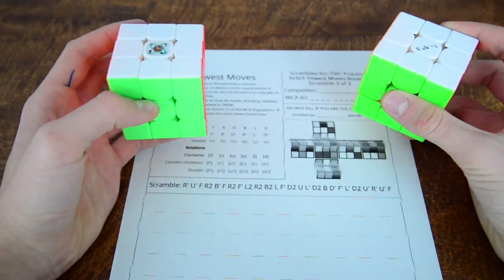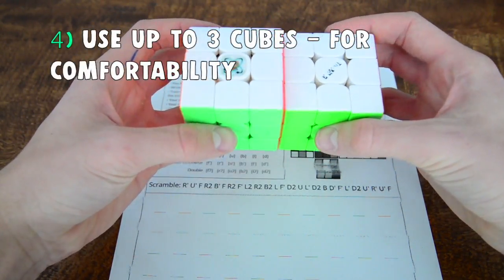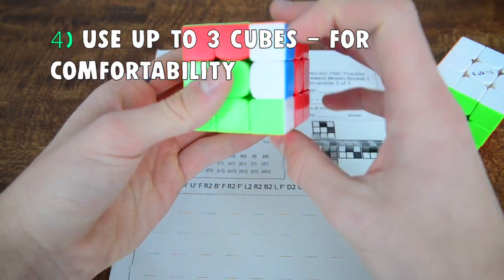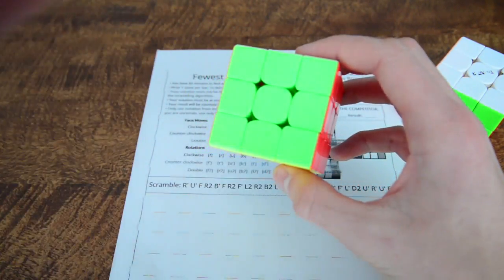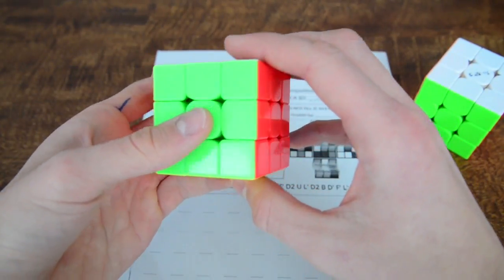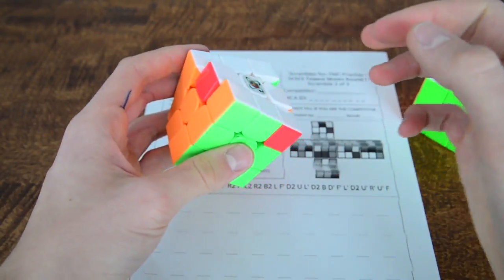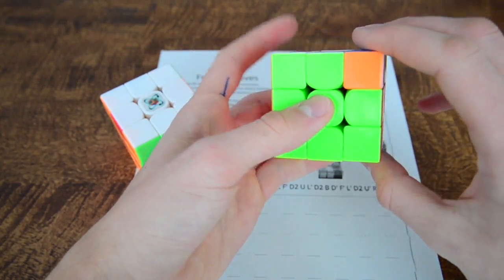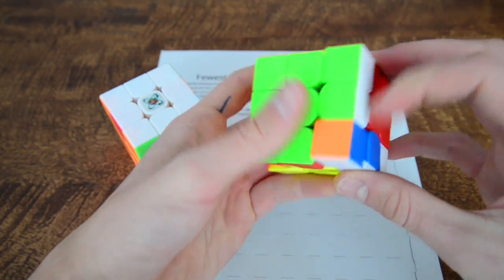So first of all it is very useful to get two cubes with you just because it is very useful to do algs fast if you have only muscle memorized the algorithms like the T-perm. It's often very hard to do the T-perm slowly while writing down the moves.